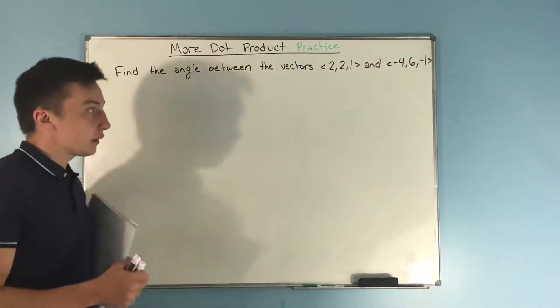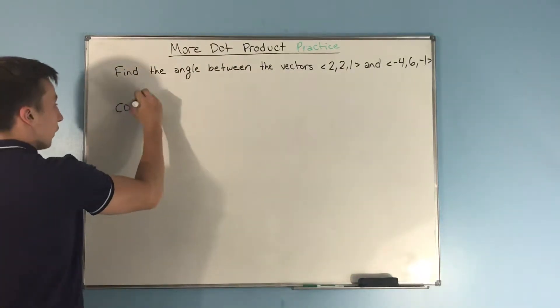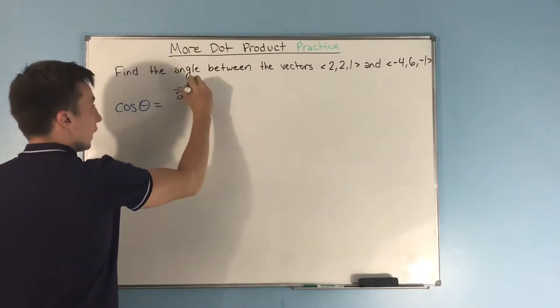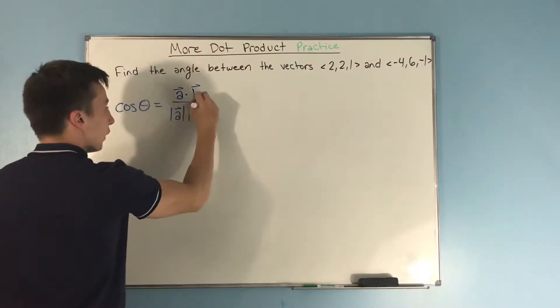To find the angle between these vectors, we need to remember that cosine of theta equals a dot b over the magnitude of a times the magnitude of b.